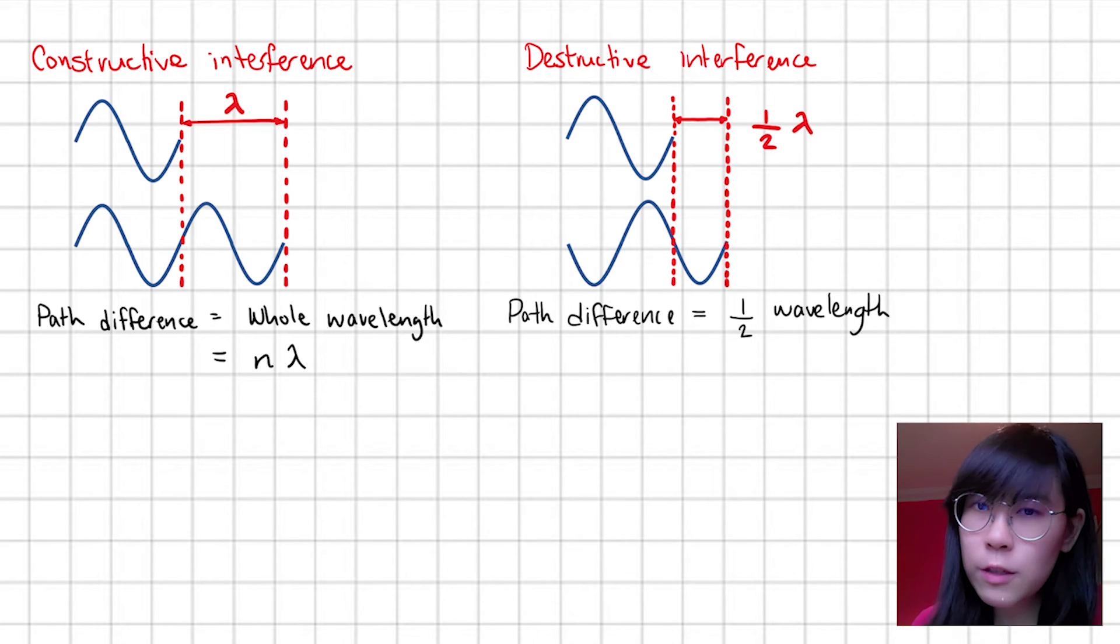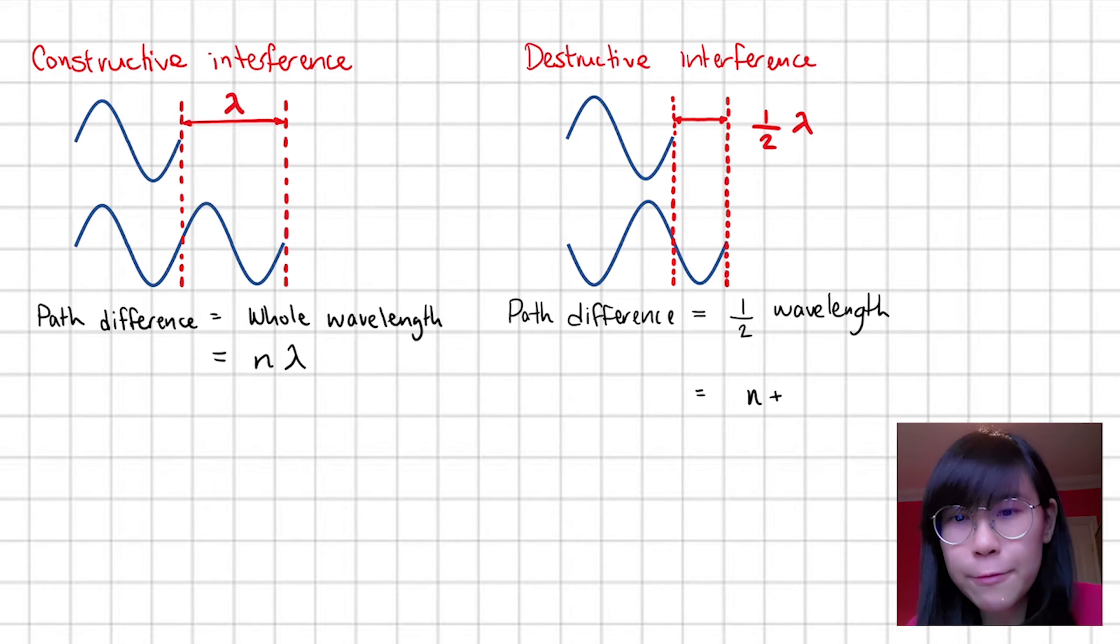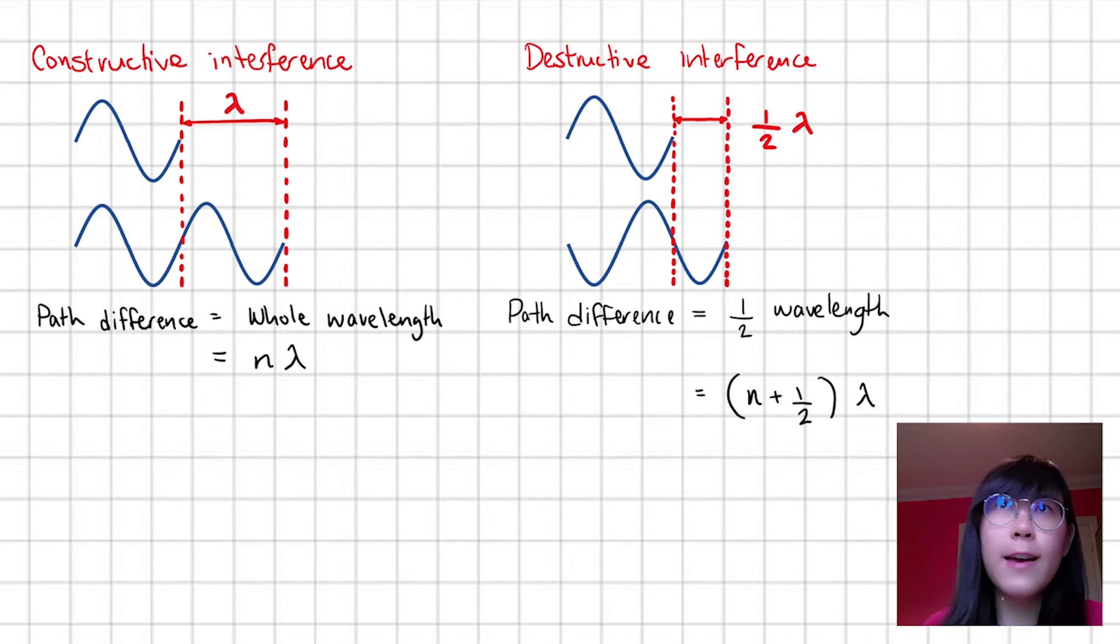But for destructive interference, the path difference has to be n plus a half times the wavelength, where n is still a whole number. So when n is zero, the path difference is just half a wavelength. But when n is one, the path difference is one and a half the wavelength. When n is two, the path difference is two and a half wavelength. The fraction one over two in the brackets ensures destructive interference.